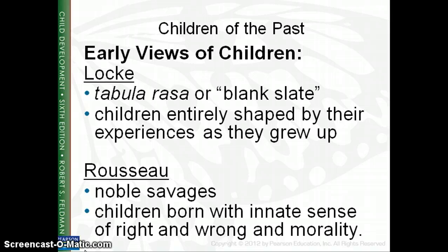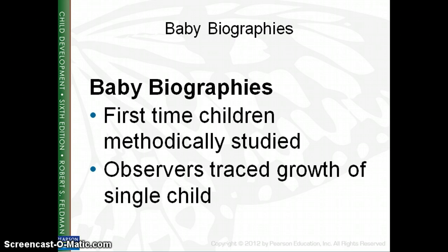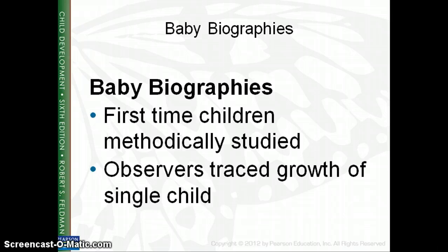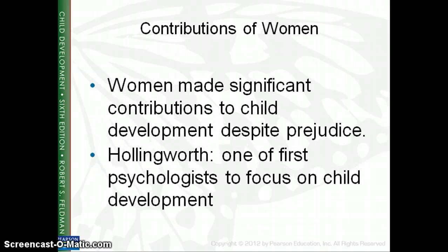Rousseau said human beings are basically good. Baby biographies were among the first instances where children were methodically studied — basically parents tracing the growth of their individual children, looking at physical milestones, language milestones, and other important events. Charles Darwin, when you think of the theory of evolution, made this more systematic. He did a baby biography of his own son, and that became the beginning of a lot more research in child development. After that, others began to study conception and genetics, and the relationship and influence of nature and nurture. Women entering the workforce and research also made major contributions to child development.